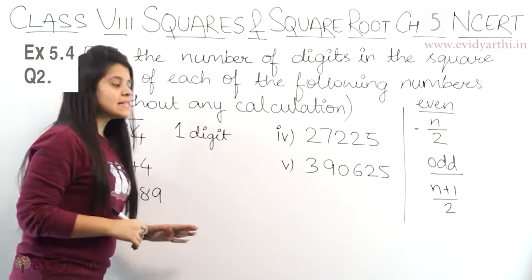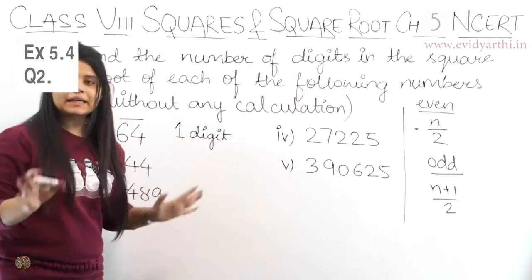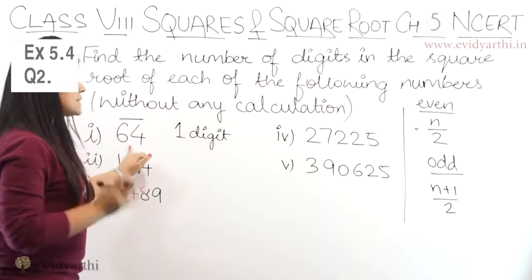So if we have two formulas, we will calculate it. So we have two numbers, so this is the same formula. So 2 upon 2, what is it? Again, 1 digit. Now moving to the second part.